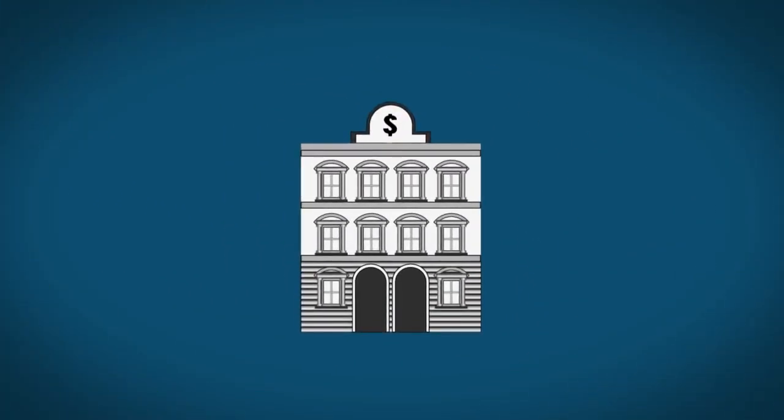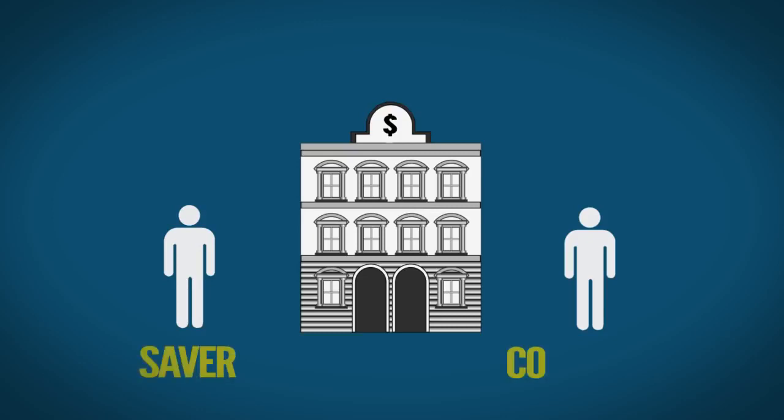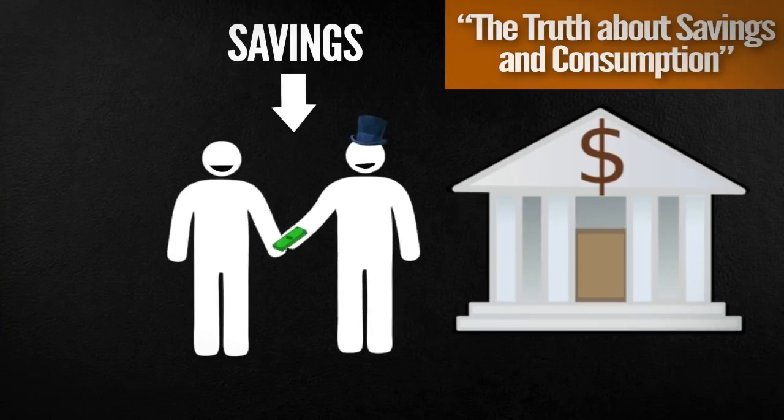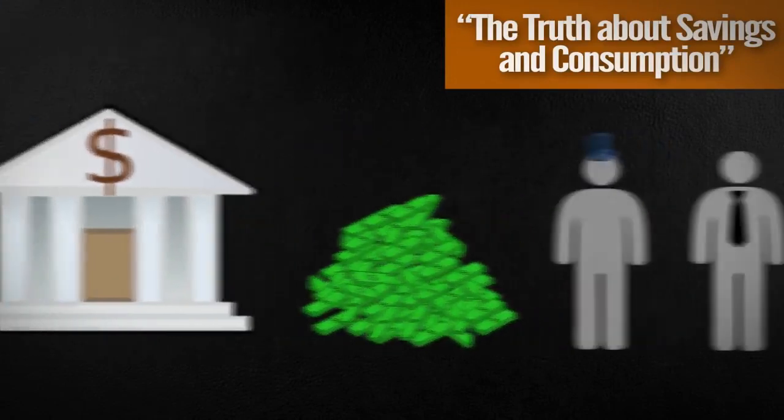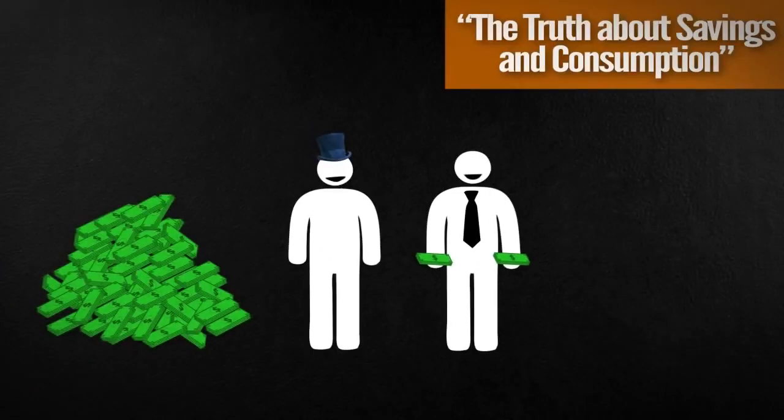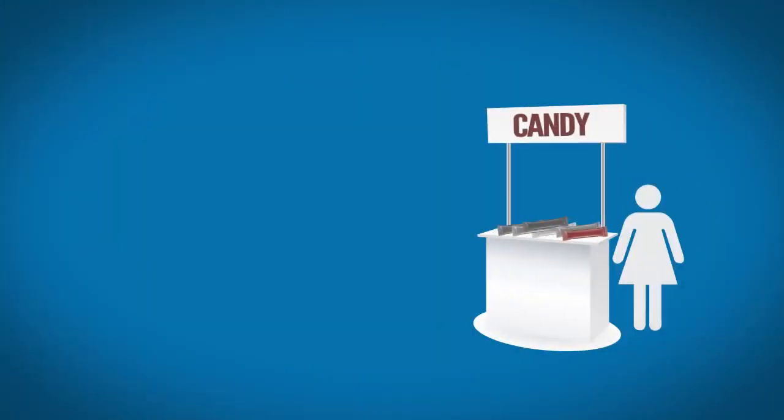Simply put, banks coordinate people's plans, the plans of savers and consumers. As we already know, when somebody saves their money in a bank, it becomes available for an entrepreneur to borrow. But banking isn't just about paper changing hands. We've got to dig a little deeper.